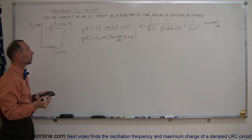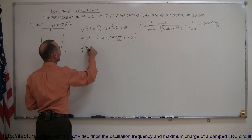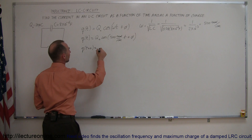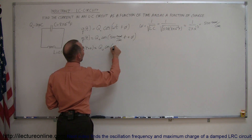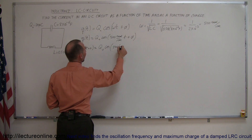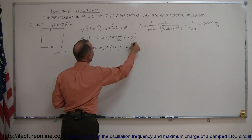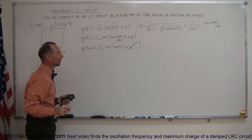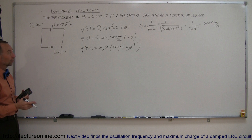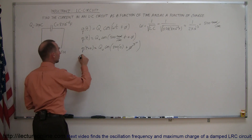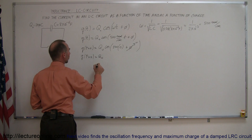As an example, Q when T equals zero: that's Q-initial times the cosine of 500 times zero plus the phase angle. If we say the phase angle is equal to zero for this example, then the cosine of zero is 1, and so Q at time equals zero is simply equal to the initial charge.